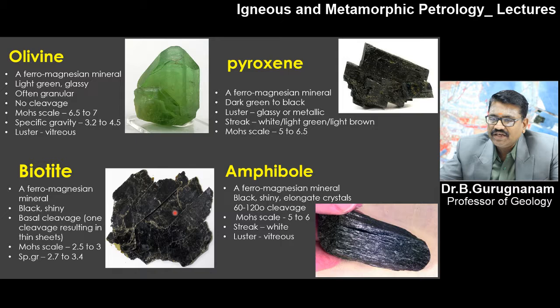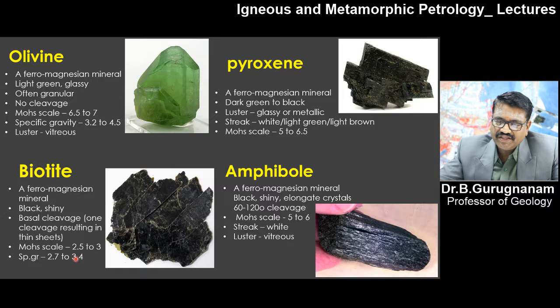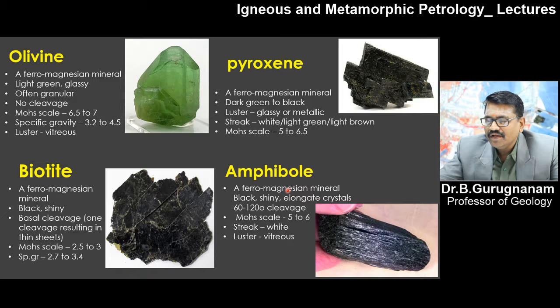Biotite has less silica — that is why it is more black in luster; the luster is vitreous. It is a ferromagnesian mineral, black and shiny in nature. It has basal cleavage — one cleavage resulting in a thin-section sheet-like structure. On the Mohs scale hardness is 2.5 to 3, and specific gravity varies between 2.7 to 3.5.